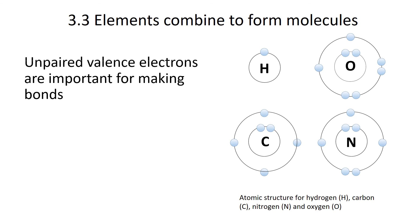Unpaired valence electrons are really important for making bonds. When you look at these four elements, you notice that there are unpaired valence electrons: there's one for hydrogen, and there are some for carbon. Nitrogen has three unpaired electrons, oxygen has two, meaning hydrogen will form one chemical bond, carbon four, nitrogen three, and oxygen two.